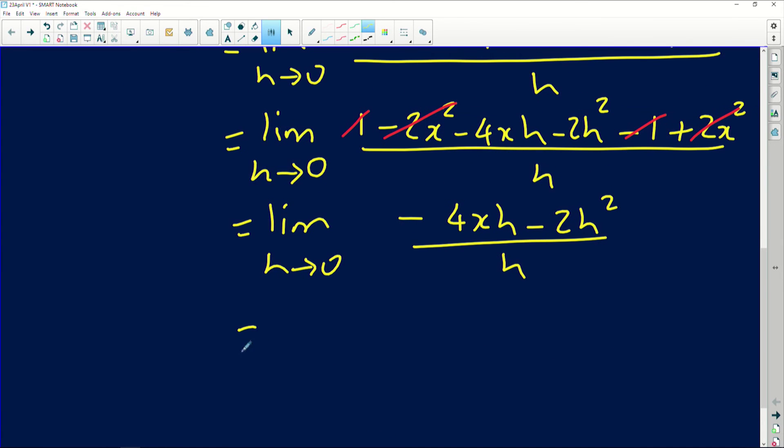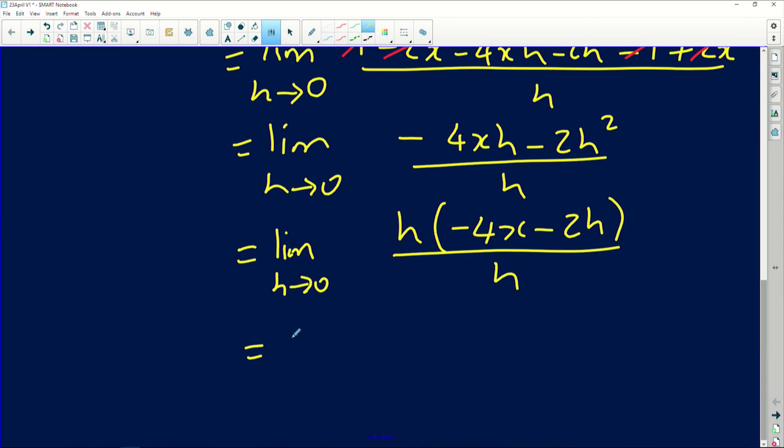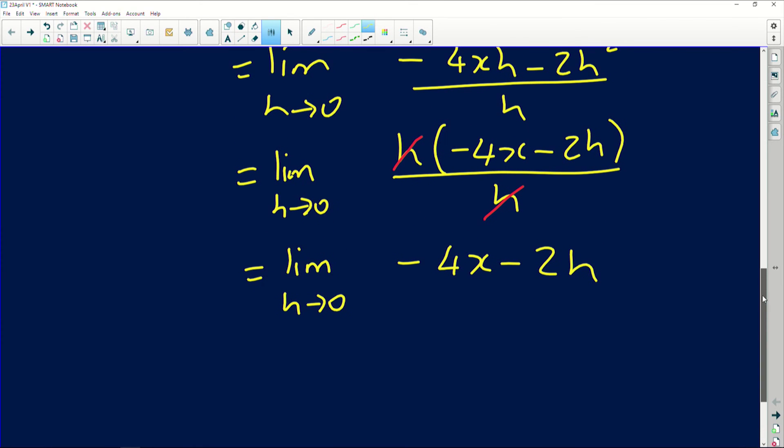So now I'm actually going to have the limit as h approaches zero. On the numerator there, you'll notice that I've got a common factor, which is h. So I'm going to factor it out. It's going to be h into minus four x minus two h all over h. Now that h on the denominator can now be removed. So I'm going to actually have the limit as h approaches zero. And then h can now remove h. Once I have removed those h's, I'm now going to be left with four x minus two h, which now means I am ready to substitute my h as zero.